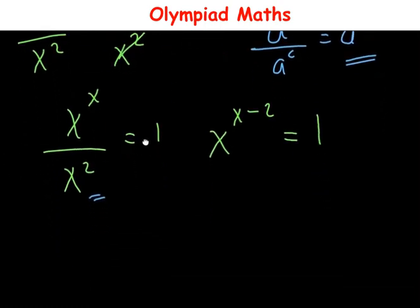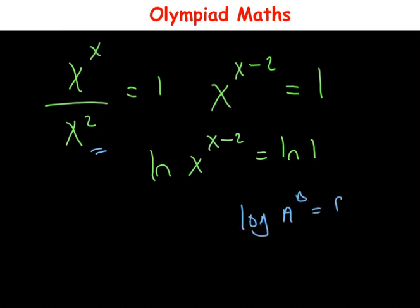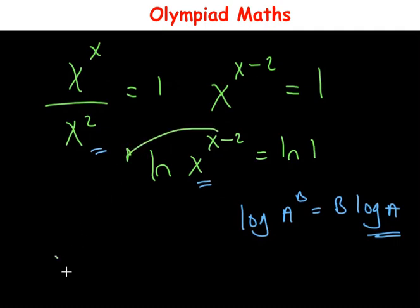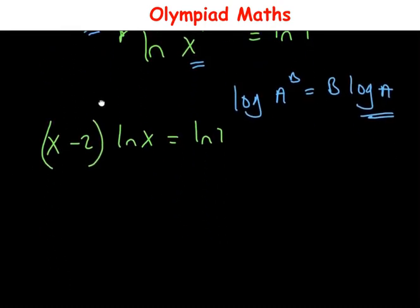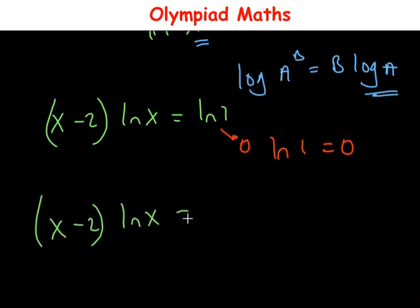We then apply natural logarithm to both sides: ln of x raised to power (x minus 2) equals ln 1. Applying the logarithm power rule, the exponent (x minus 2) comes down, giving (x minus 2) multiplied by ln(x) equals ln 1. Since ln 1 equals 0, we have (x minus 2) times ln(x) equals 0.